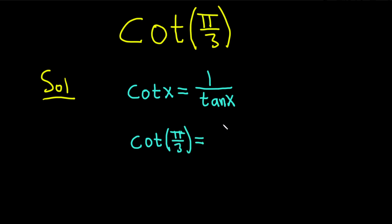And this is equal to 1 divided by the tangent of x. But x is pi over 3. So tangent of pi over 3. So this is equal to 1 over the tangent of pi over 3, which is the square root of 3. So the cotangent of pi over 3 is 1 over the square root of 3.